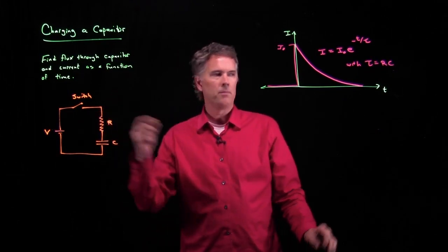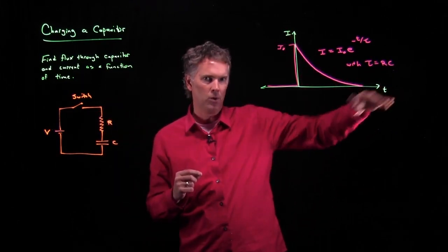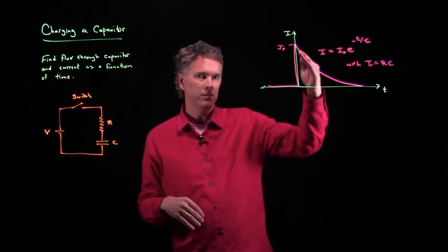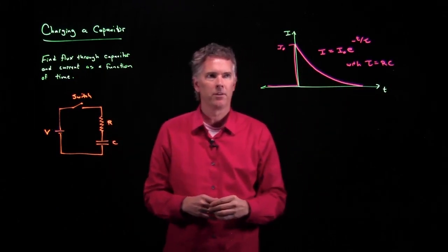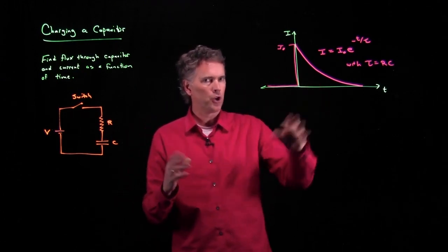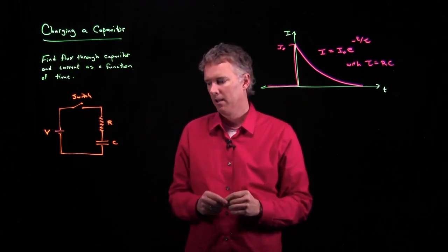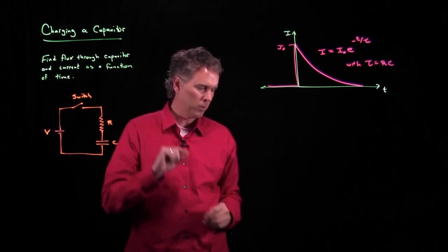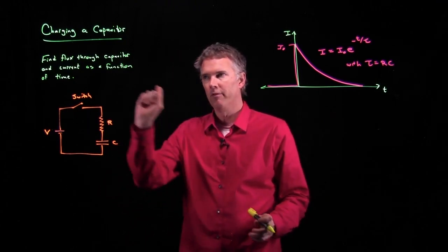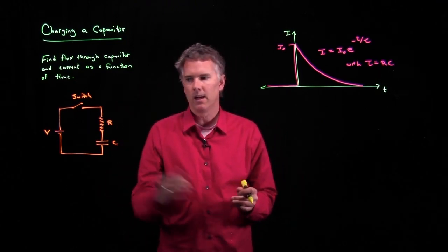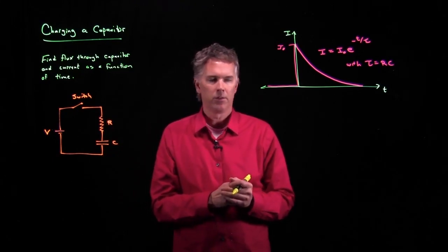Big r means that this thing decays slower. Big capacitor means it decays slower, it takes longer to charge up the capacitor. All right, so this is what the curve for current looks like. So now let's go back to the question. We wanted to figure out what the electric field flux is inside this capacitor. What is it through the capacitor?